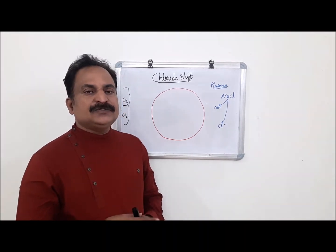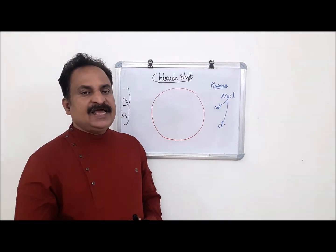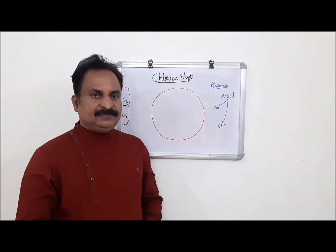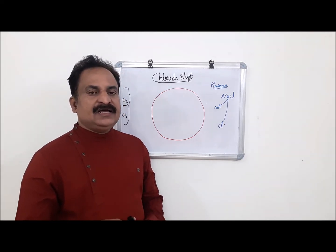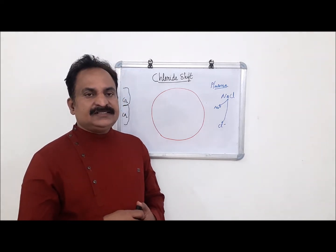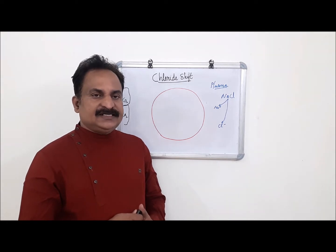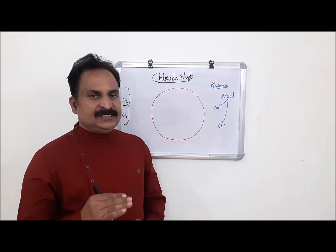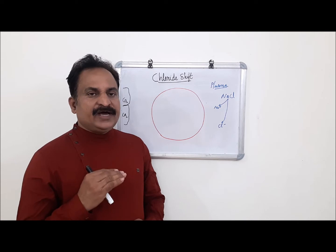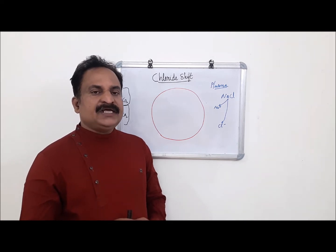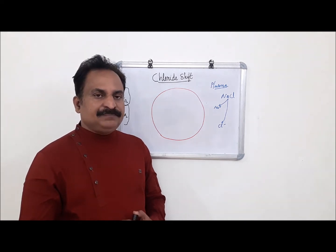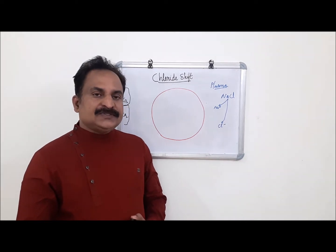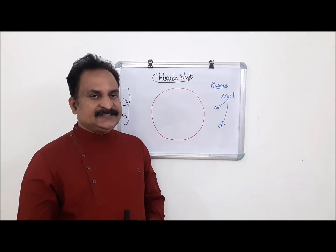Carbon dioxide is produced in the cells as a result of cellular respiration — glycolysis, Krebs cycle or TCA cycle, and the electron transport chain. As a result of this intermediary metabolism or metabolic process, carbon dioxide is produced in the cell.